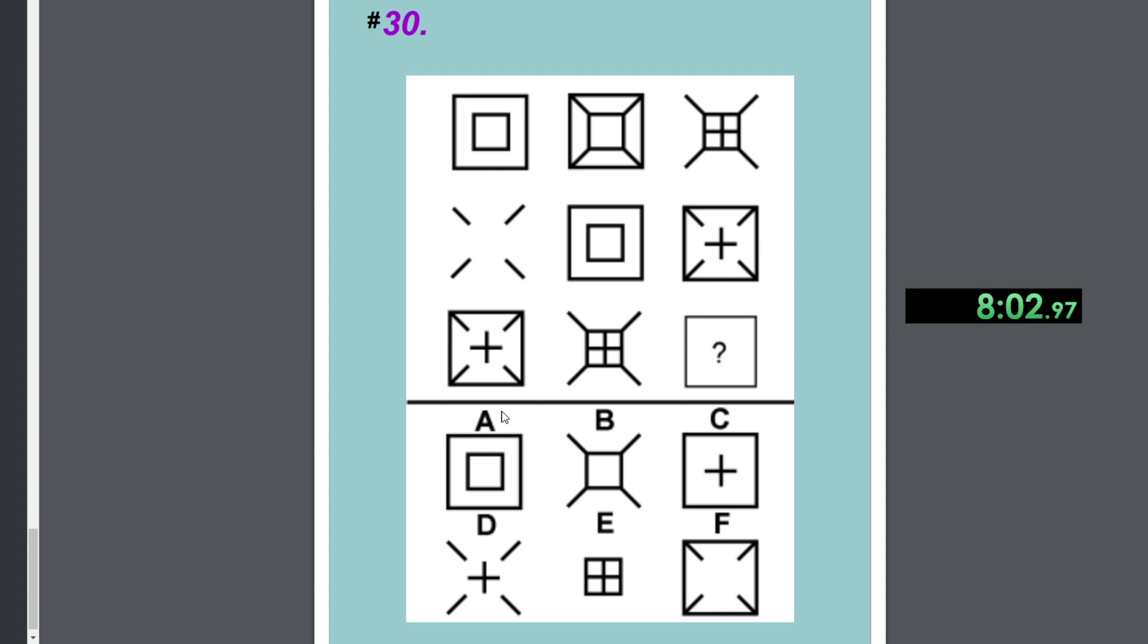I'll allow myself a tiny bit of extra time and solve the last one. But otherwise, this last one would have been wrong, I guess. So, this looks like addition with cancellation. But, where? Yeah, in these diagonals. This plus this gives this. This plus this gives this. So, this plus this gives a square with a square inside. A is correct.